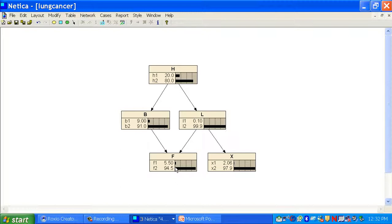The prior probability of lung cancer is much smaller, 0.1. This is the prior probability of being fatigued. It's 0.05 again. And this is the prior probability of having a positive chest x-ray. That's 0.02.